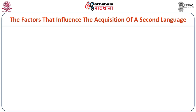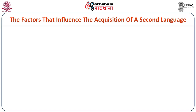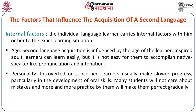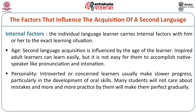The factors that influence acquisition of a second language are both internal and external. Internal factors include age — second language acquisition is influenced by the age of the learner. Adult learners can learn more easily because they take help from the native language, but it is not easy for them to accomplish native-speaker-like pronunciation and intonation, which comes more naturally at an early age. Regarding personality, introverted or anxious learners usually make slower progress, particularly in the development of oral skills, while students who don't care about mistakes and practice more will gradually improve.